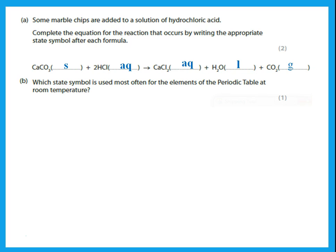Which state symbol is used most often for the elements of the periodic table at room temperature? Remember that group 1, group 2, transition metals, group 3 — all of these are metals, and metals are usually solids, except for mercury. In the non-metals, many are solids and some are gases. So the main state symbol used most often is solid, (s).